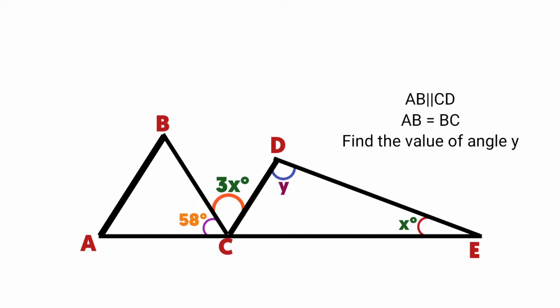In this question we are asked to find the value of angle Y. Line AB is parallel to line CD and AB is equal to BC. From triangle CD, if you look, this angle, this angle, and this one are supposed to be equal to 180 degrees if you add them up together.